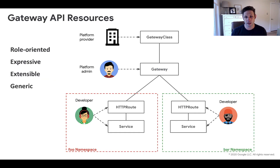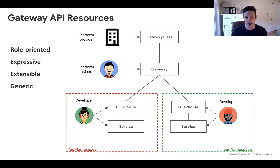This separation also allows many different teams to share the same Gateway resources, even across namespace boundaries. This allows platform administrators to centrally control who has access to the Gateway and the policies on that Gateway, while delegating routing control in a distributed way to different teams.